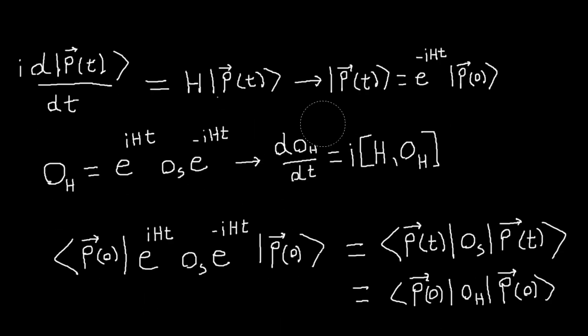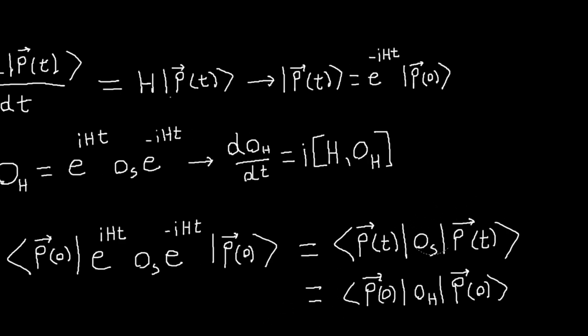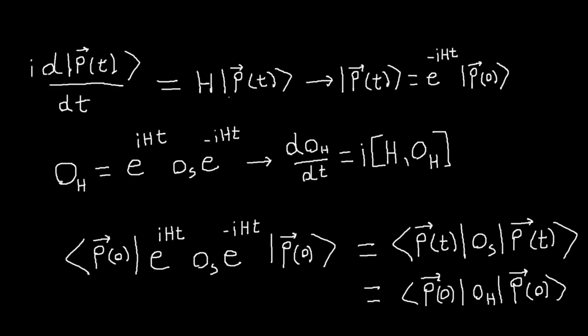So in either of those pictures, when you take the expectation value in some state, you get the same answer. So if I have in the Schrödinger picture, to find the expectation value of this operator in the state as a function of time, I would squish it between the time dependent states. And in the Heisenberg picture, I would take my Heisenberg operator and squish it between my time independent states. But both of these expressions are going to be equivalent to this.